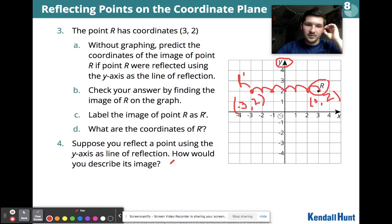Now it says, suppose you reflect a point using the Y axis as line of reflection, how would you describe its image? We can now describe it that it's going to flip and the X signs are going to change. The X points are going to change signs.